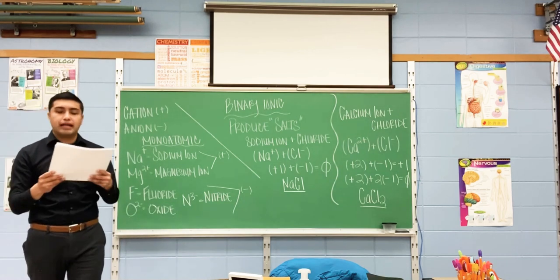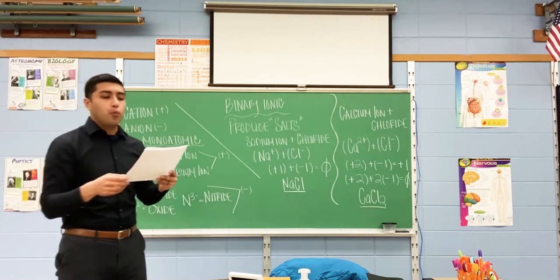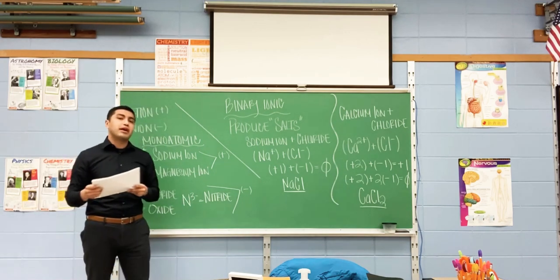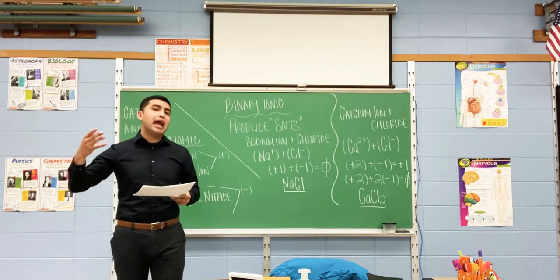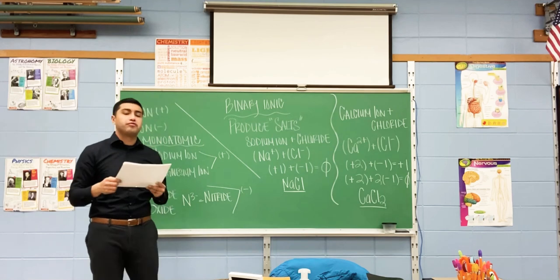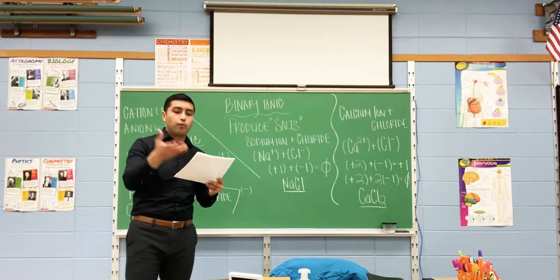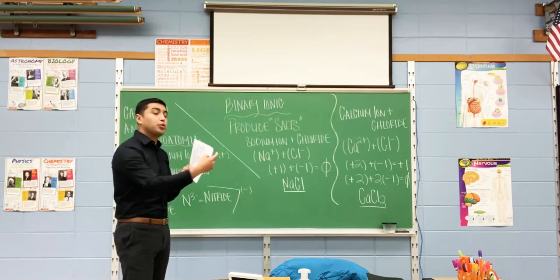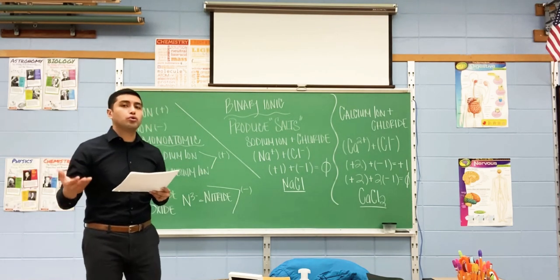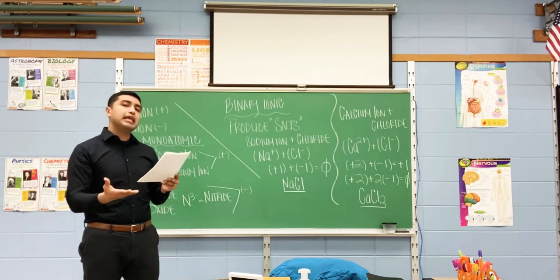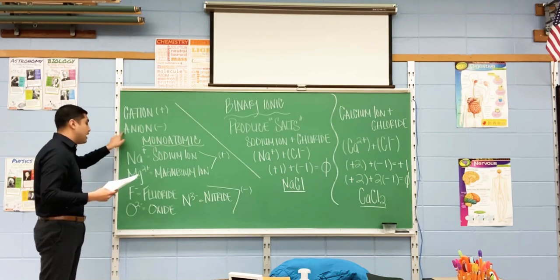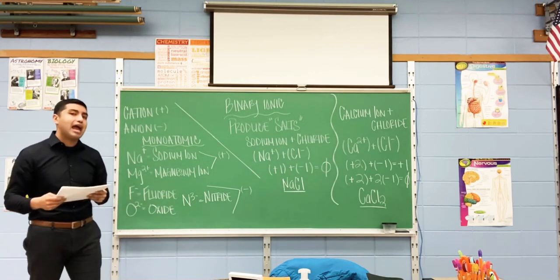Let's look at another element in that same row — sulfur, which is element number 16. It's also in row number 16. Sulfur carries a charge of negative two. When you are naming it as an ion, you will no longer call it sulfur; you will call it sulfide. Let's look at chlorine, element number 17. Chlorine is also in row number 17 and carries a negative charge. It is no longer chlorine — it is called chloride. Any ion that carries a negative charge, which is known as an anion, you drop the ending and add -IDE afterwards.